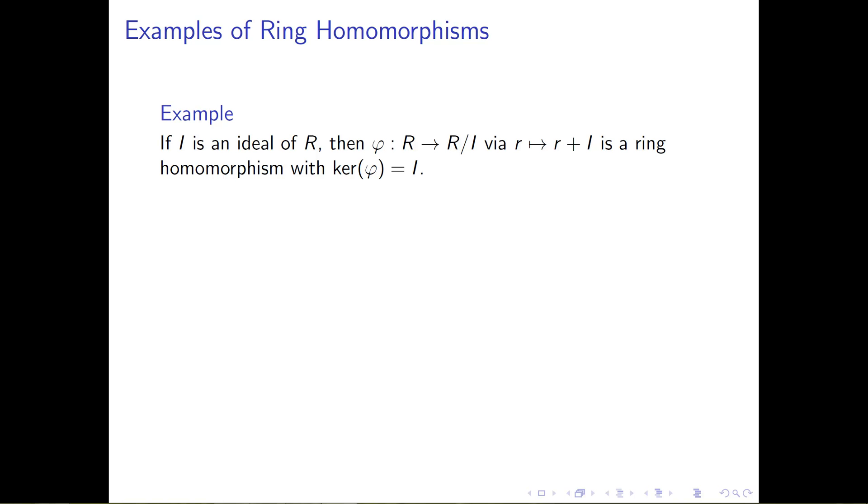Continuing with examples of ring homomorphisms, I want to pause from the concrete examples we just did to do a very important theoretic example for us. Then we'll go back and do one more example where everything is very specific just to work out some more examples.